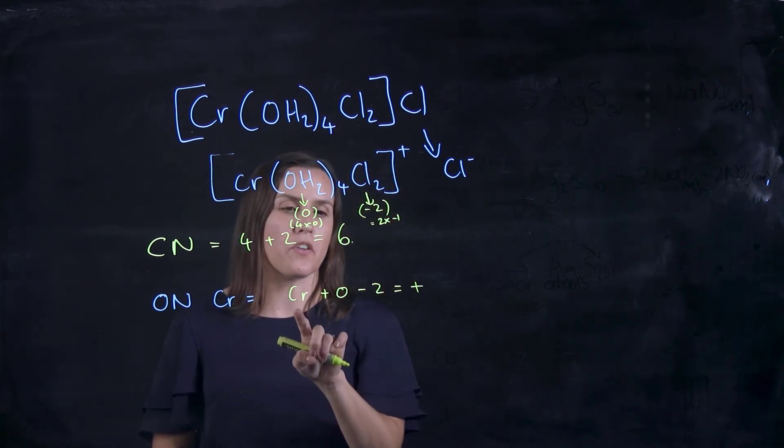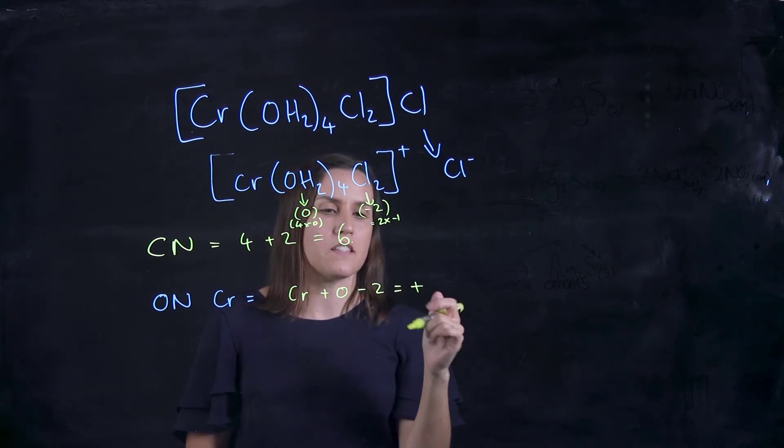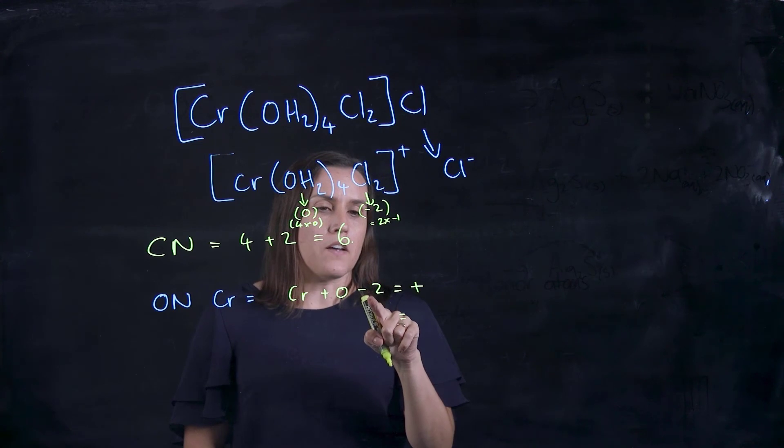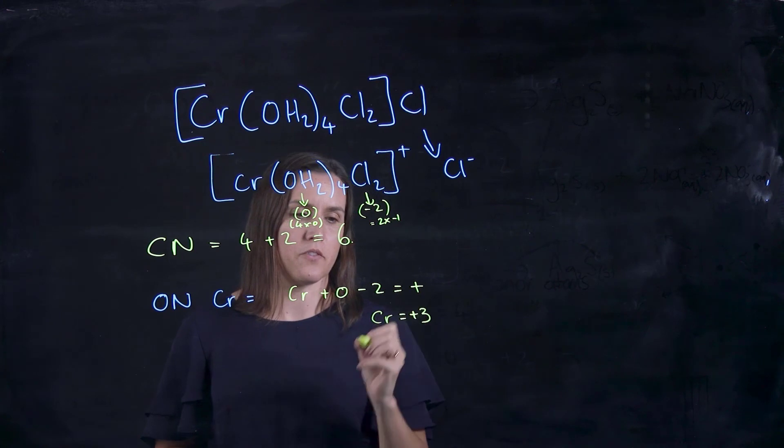So then just working out what the chromate is. So -2, I take it to the other side would give me a -2 plus 2. So it'd be a +3. So that would be a +3.